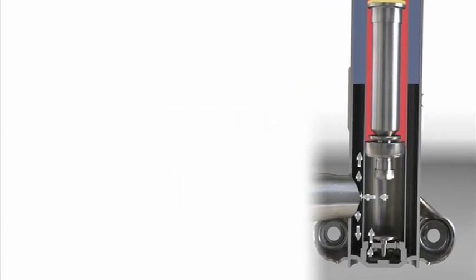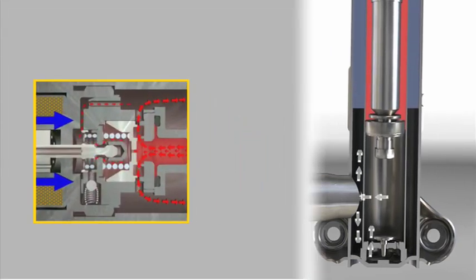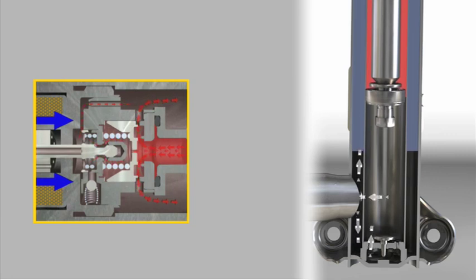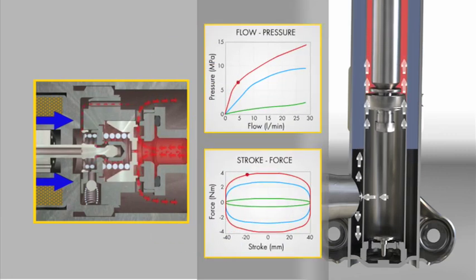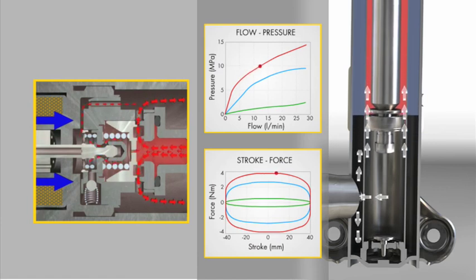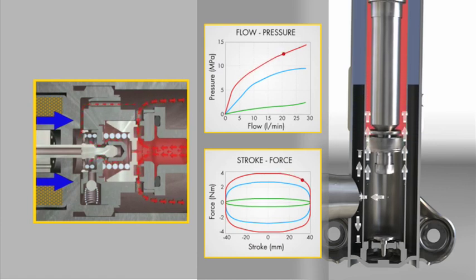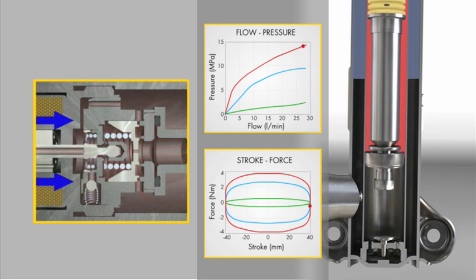The CCES valve controls the oil passage both in compression and extension. Therefore, the electronic control unit has precise, almost instant, full control over the compression and extension forces to be applied in each of the dampers at all times.